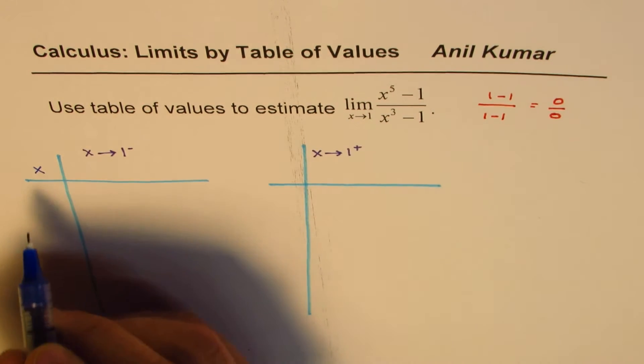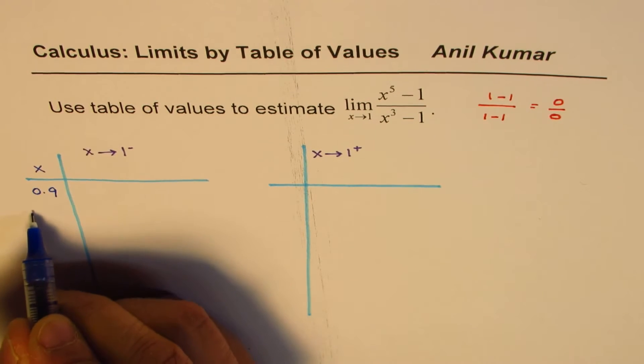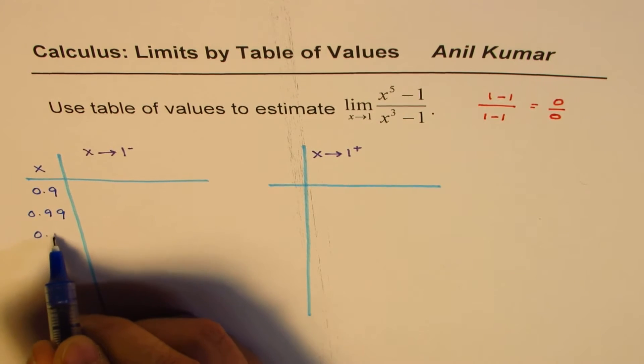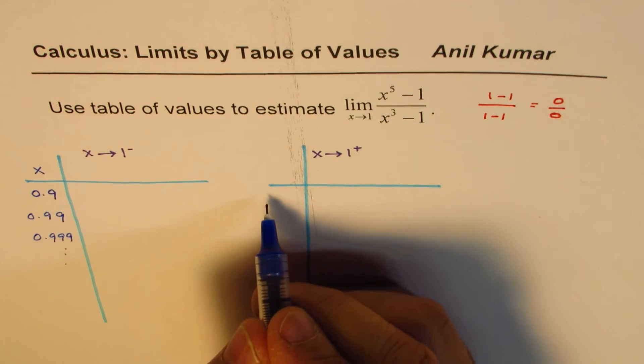So it's like 0.9, 0.99. So we can say the value could be, x value could be 0.9, it could be 0.99, 0.999, and so on.